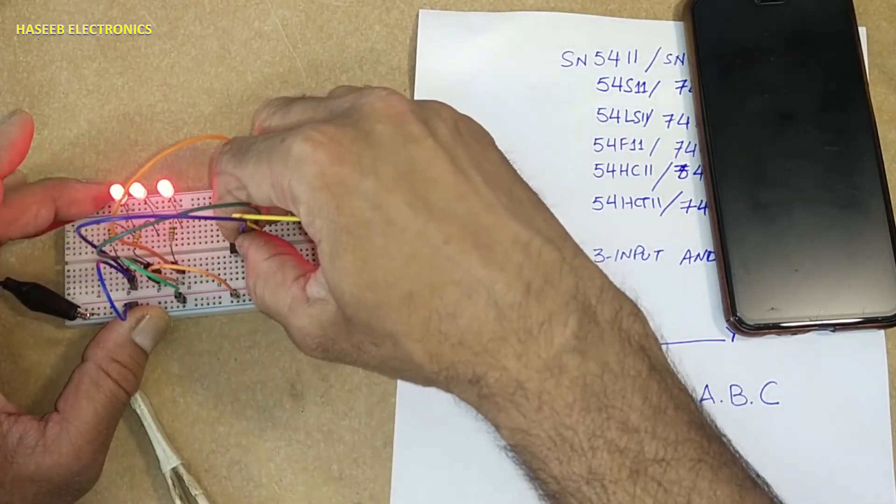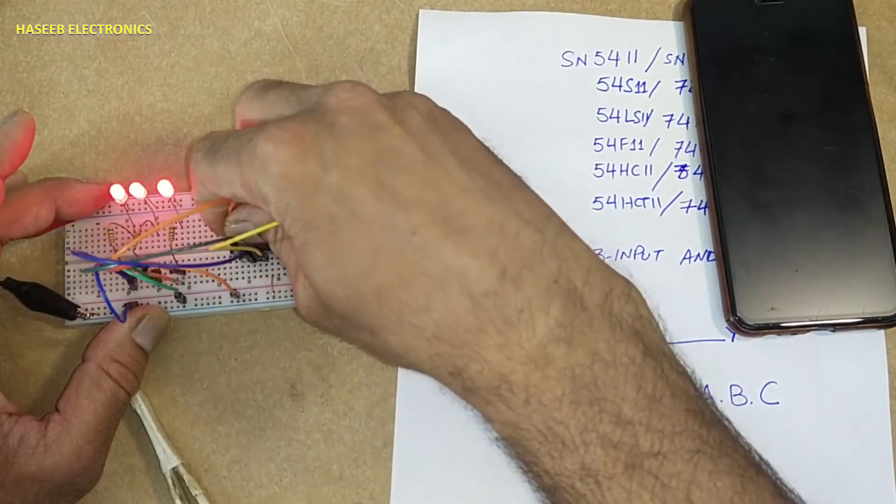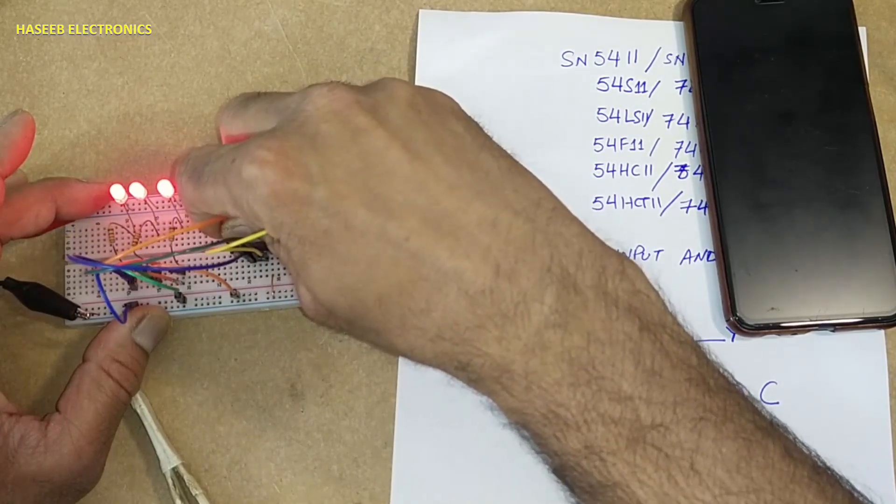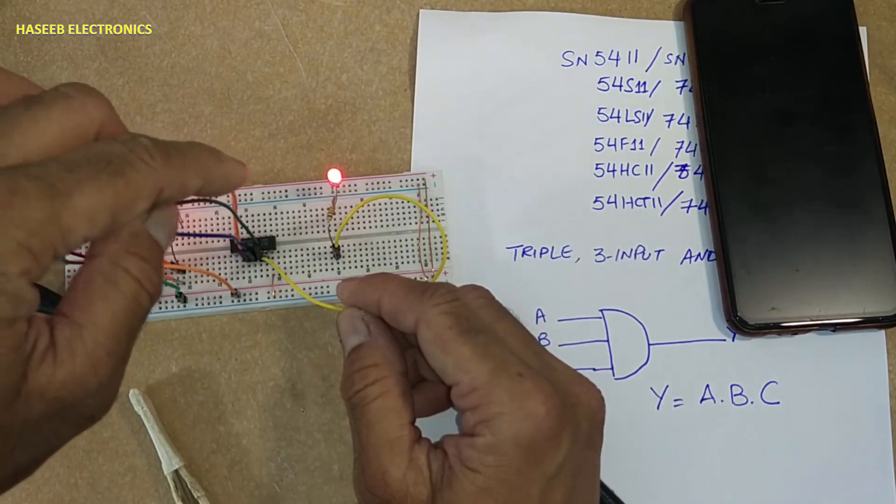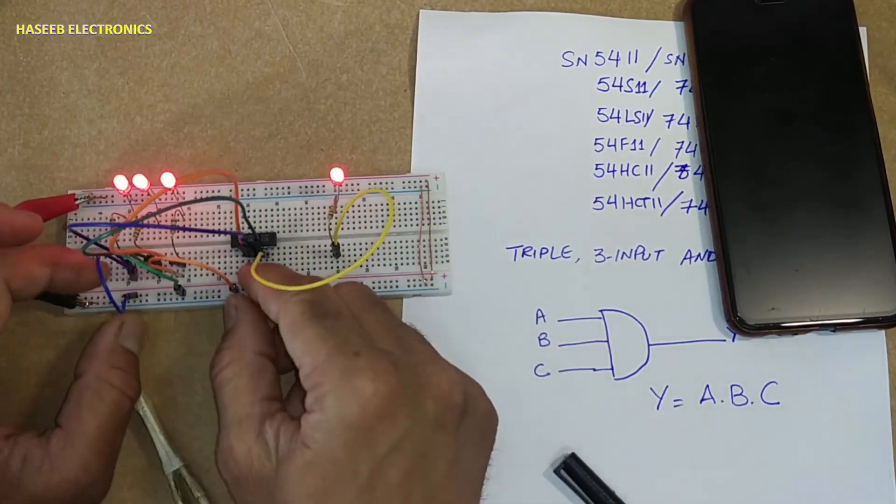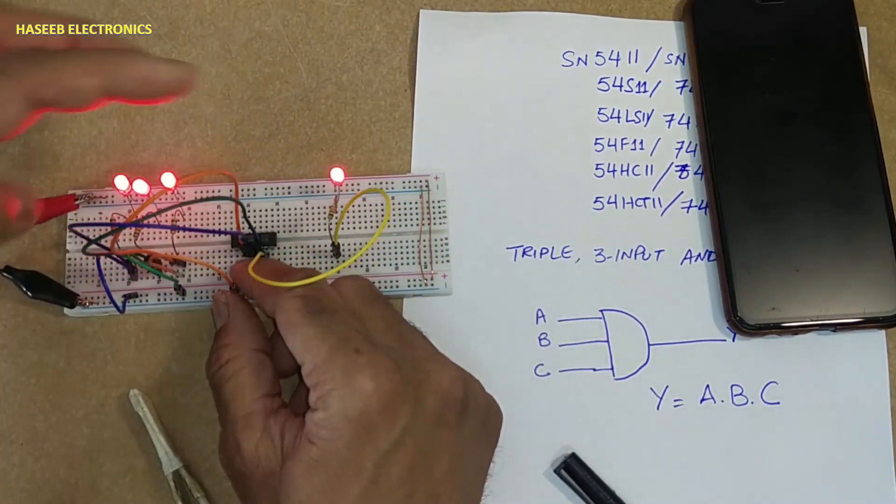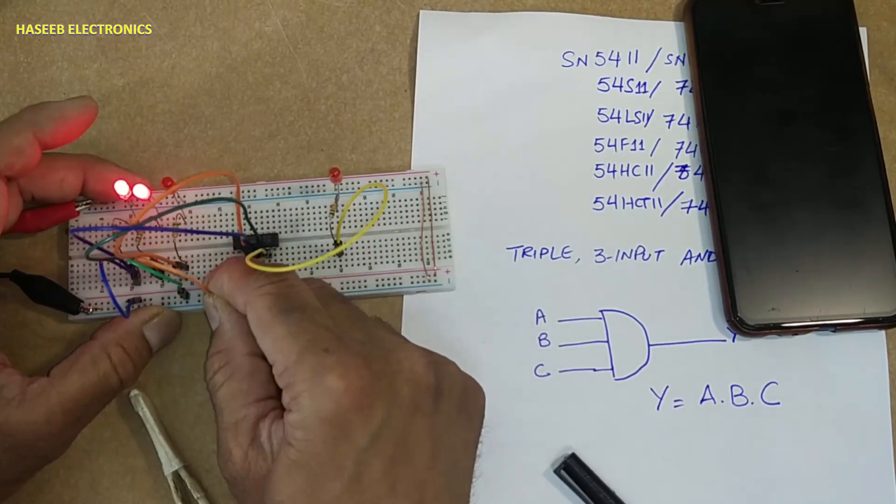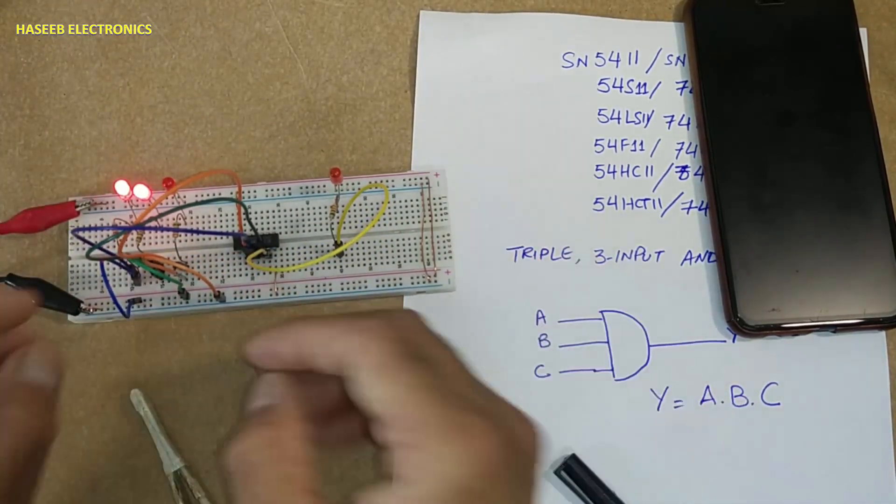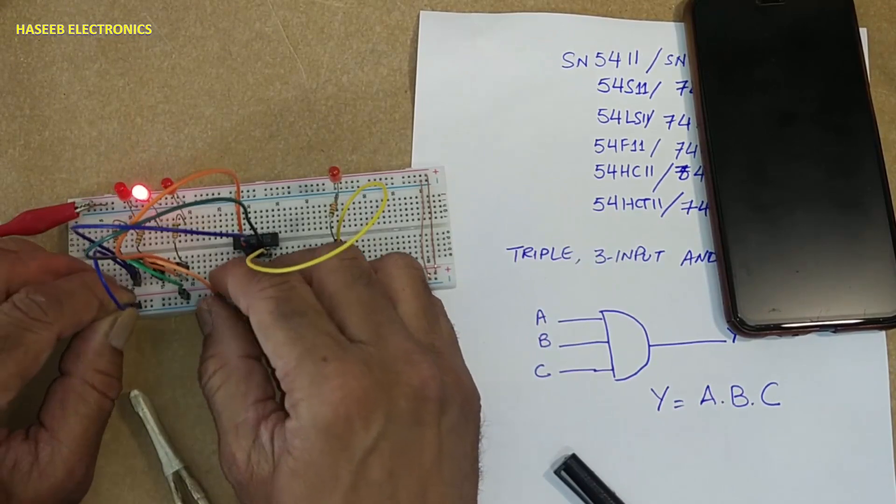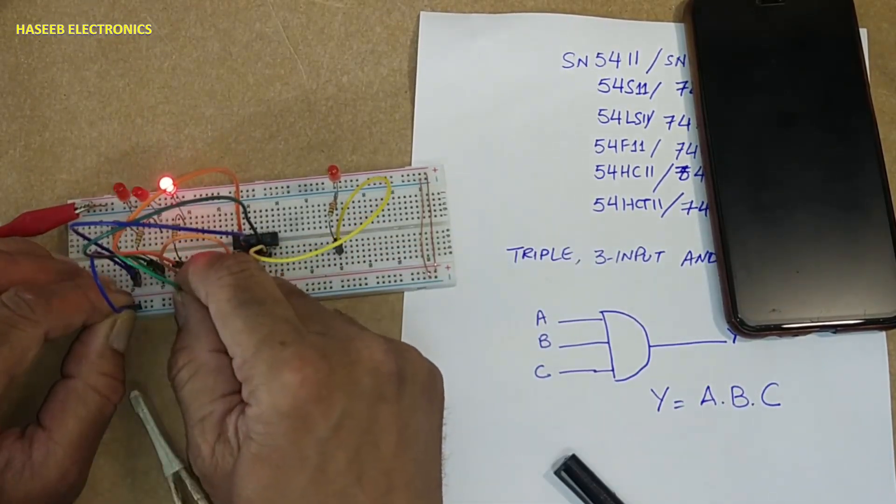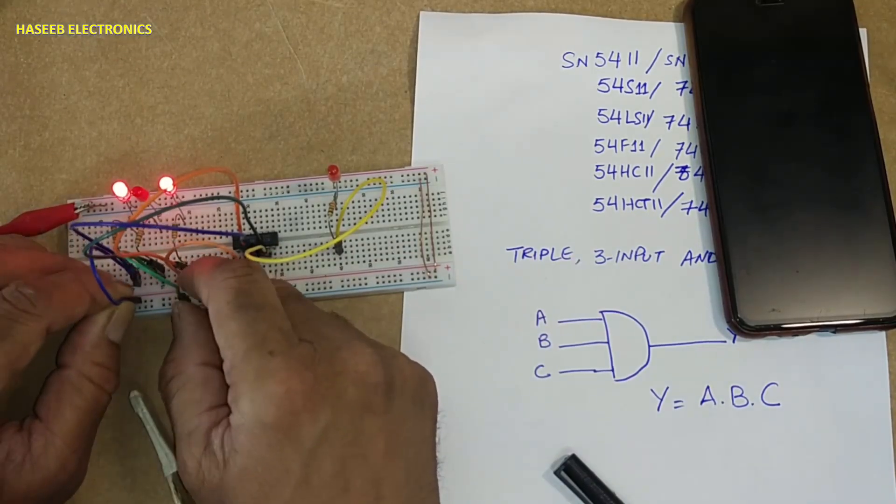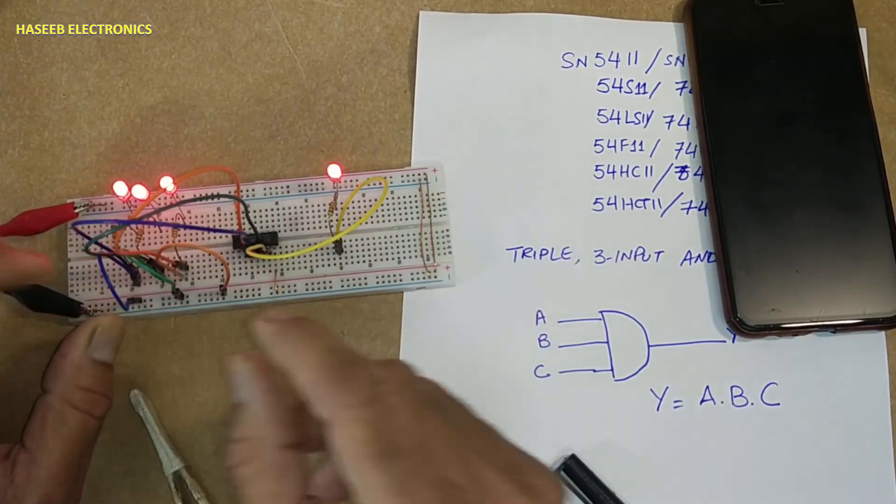Five, four. Three input, three, four, five input, six output. All inputs high, output high. One input low, output low. Any one low, output low. All high, output high.